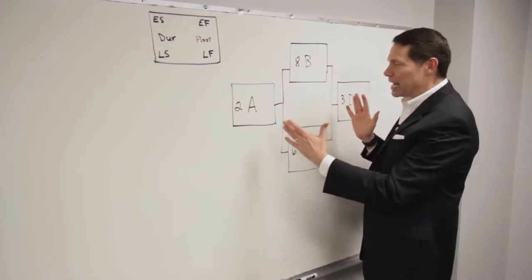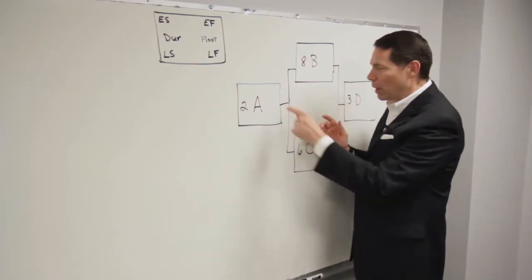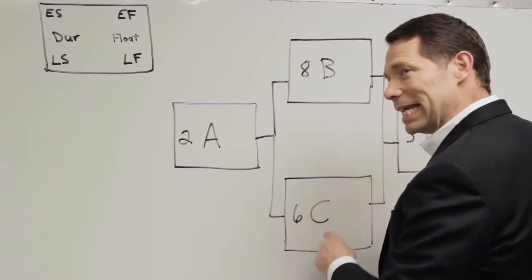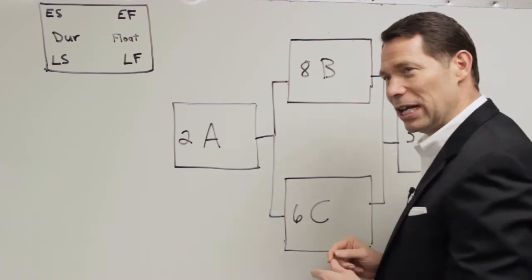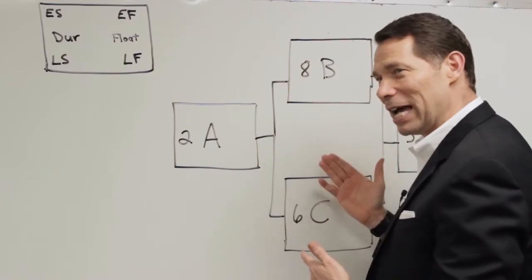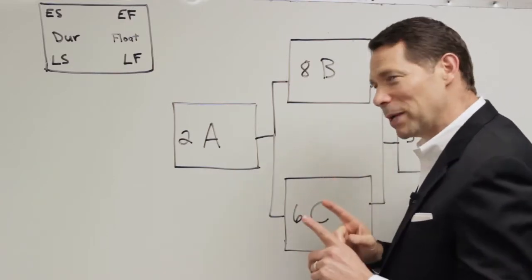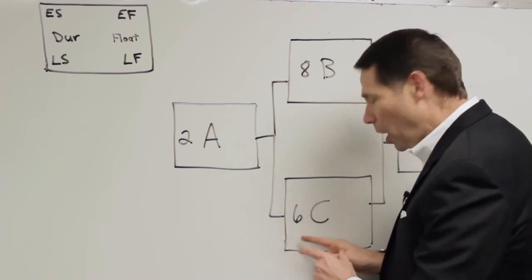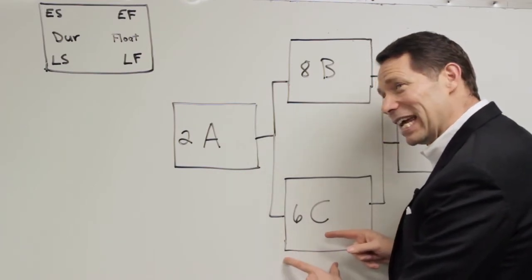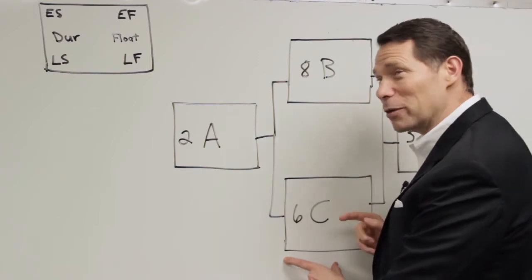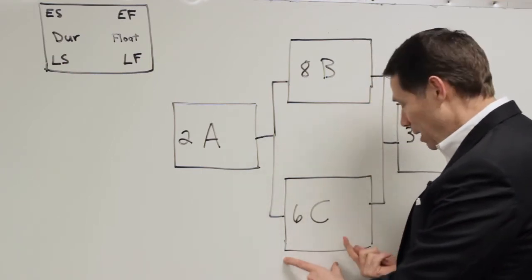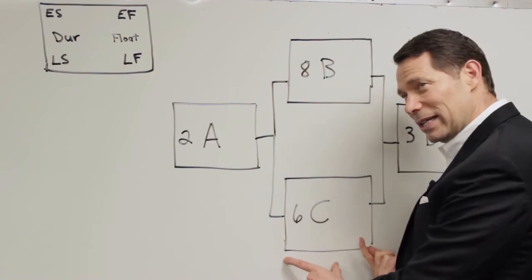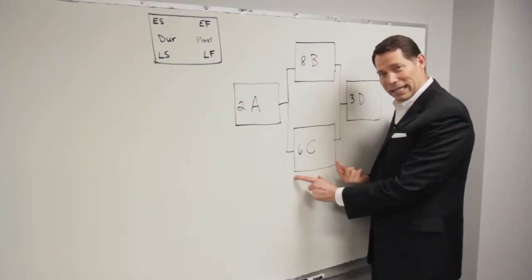These are finish to start relationships. A must finish before B and C can start. D can't start until these finish. So what it's saying is B and C can be done at the same time. Let's say, since this is eight and this is six, if I start activity C at the exact same time I start B, how many days do I have at the end? I think it's pretty clear. I've got two days at the end.